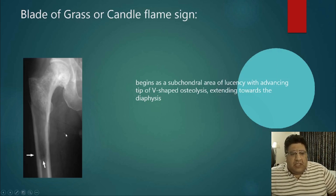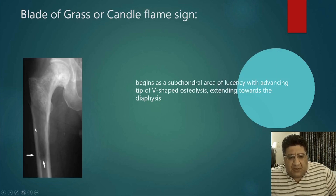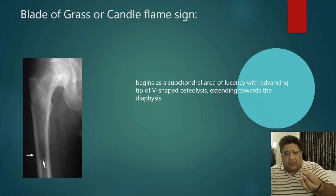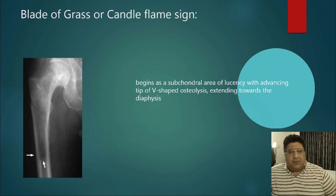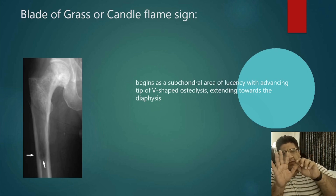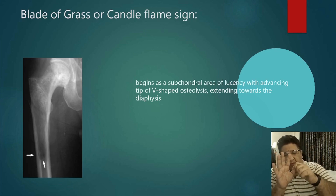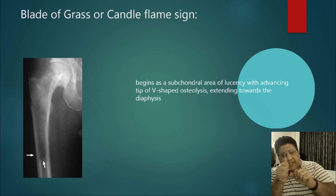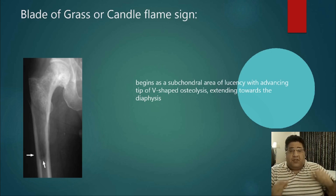The final X-ray sign is the blade of grass or flame sign — a conical translucency with a broad apex and narrow base in the femur, representing the phase of resorption, as if a flame or blade of grass has appeared in the bone. To summarize the X-ray signs: blade of grass/flame sign, cotton wool skull, osteoporosis circumscripta, banana fracture, tam o'shanter sign, brim sign, picture frame spine, and ivory vertebra.